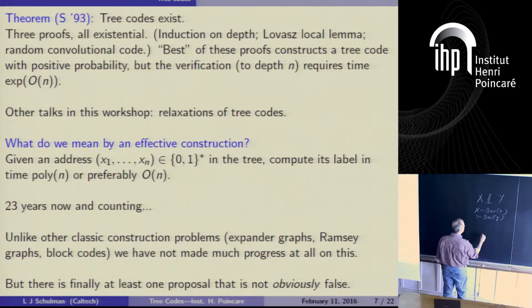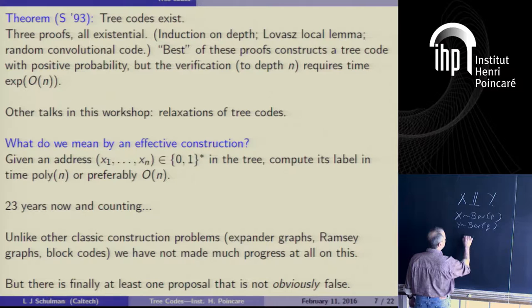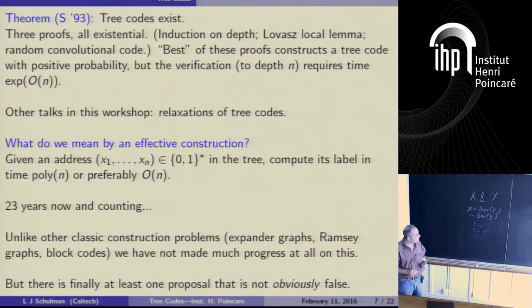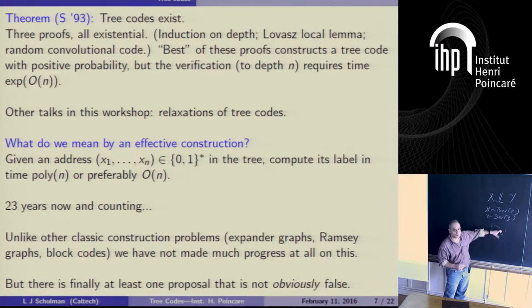There's a construction that takes time, for any epsilon greater than zero, that can construct these things in time two to the n to the epsilon, using an alphabet size that scales like one over epsilon. So you can trade these parameters off.